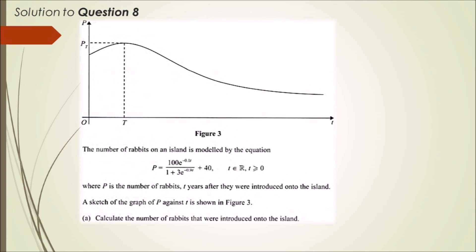Part A: Calculate the number of rabbits that were introduced onto the island. If you want to calculate the number of rabbits that were introduced, this is from the very beginning of time, which is at time zero. So they want us to plug in t equals zero into that equation.